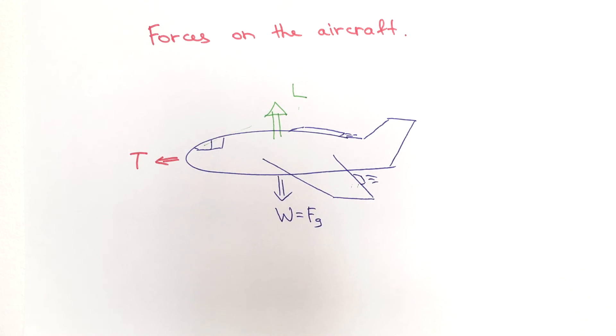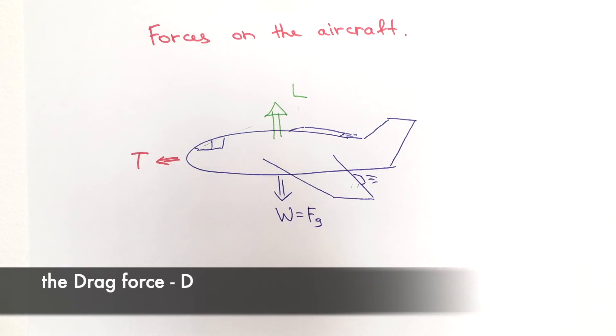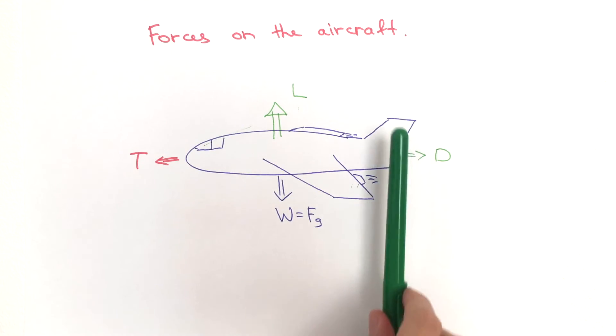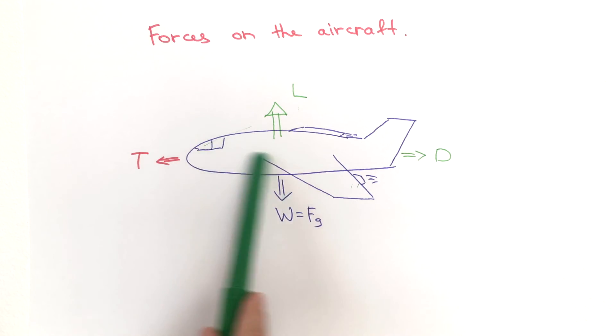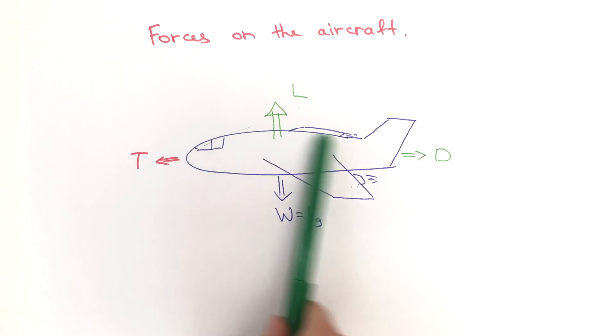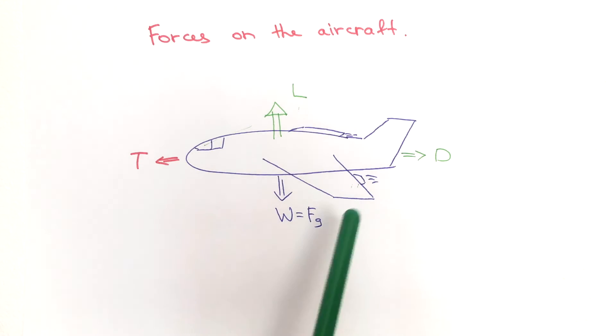And there's one more force that opposes the thrust and this force is called drag. Because the aircraft is not 2D but 3D, it exists in 3D space. When the aircraft moves forward, there's all these air resistance that acts on the aircraft, and we also cannot create a perfect airfoil that creates zero drag. There will always be some inefficiencies that result in drag force, and usually lift and drag go hand in